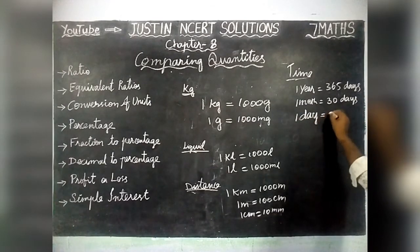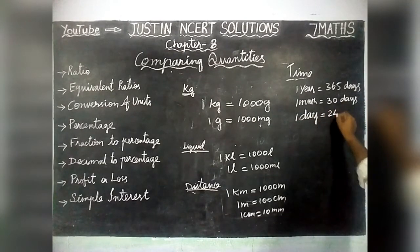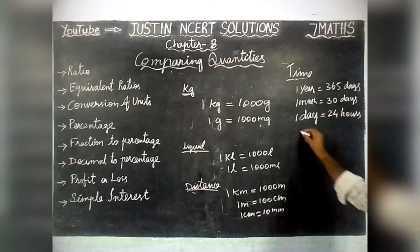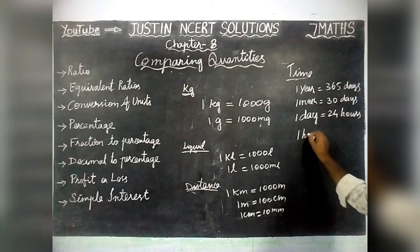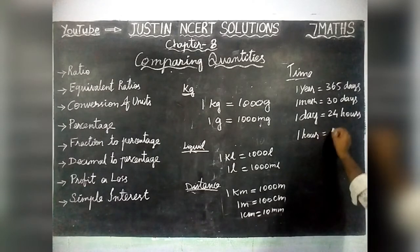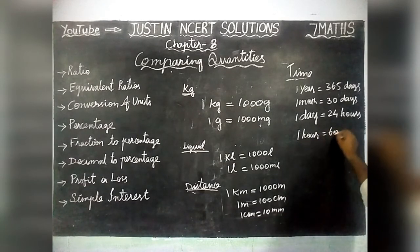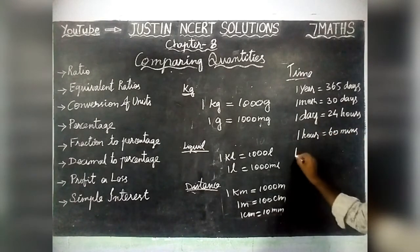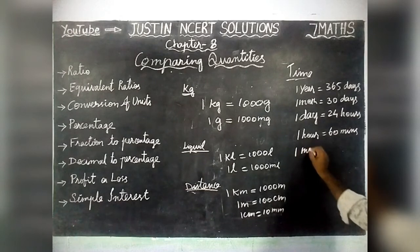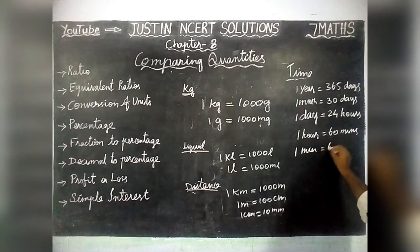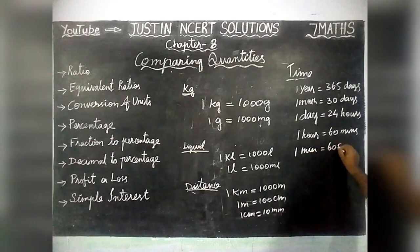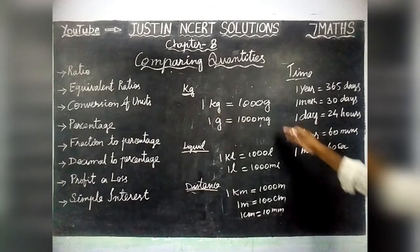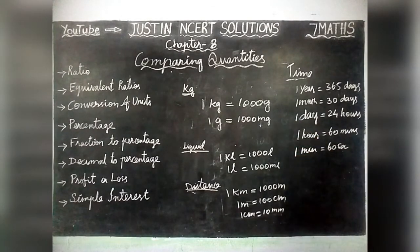1 Day is equal to 24 Hours. 1 Hour is equal to 60 Minutes. 1 Minute is equal to 60 Seconds. So these are all the very important conversions for Mass, Liquid, Distance, and Time.